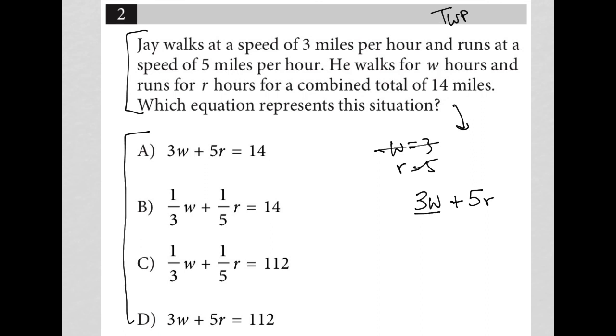Okay, so the distance walked is 3W. The distance ran is 5R. And we know that all together, that's 14. Okay, so there is our equation.